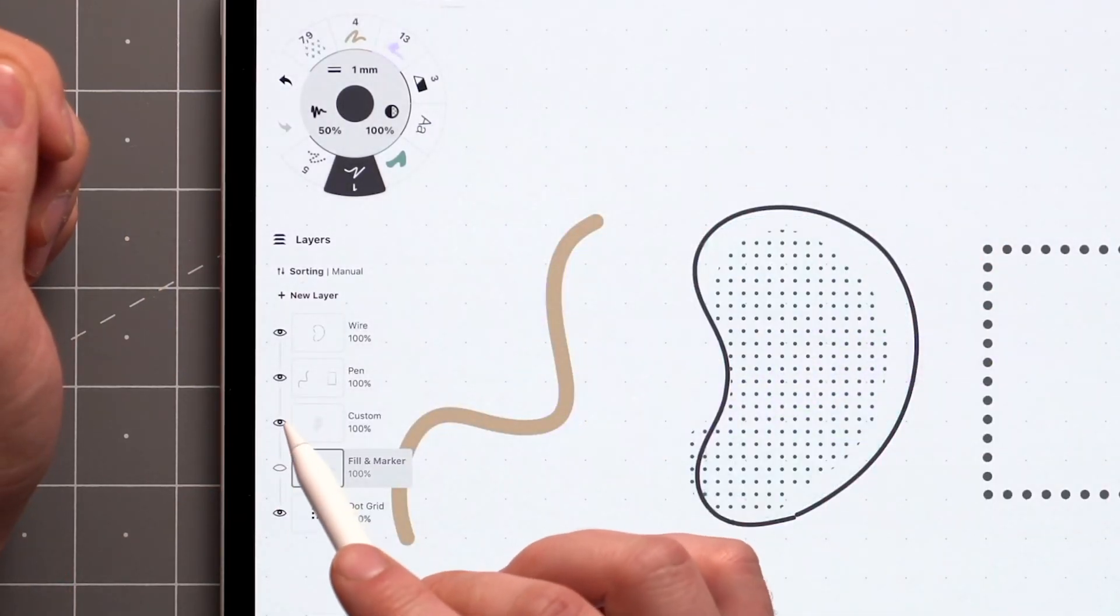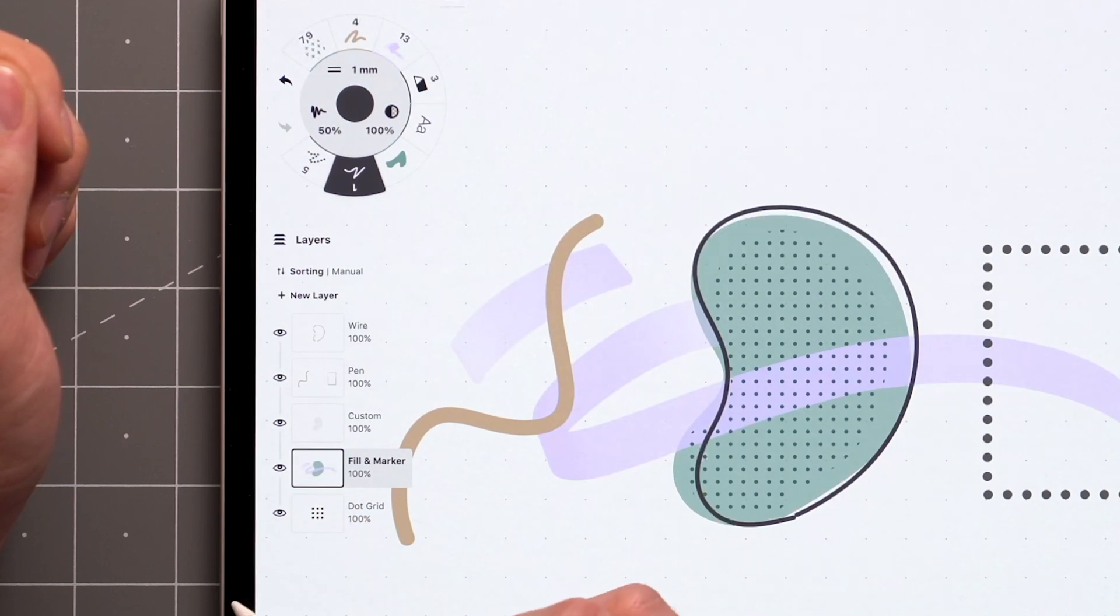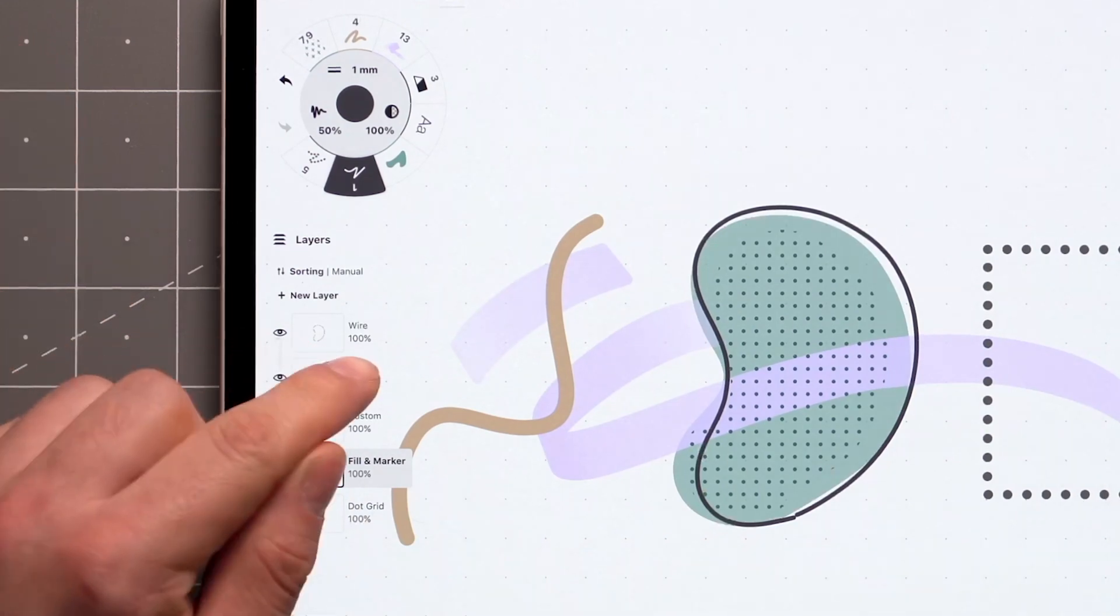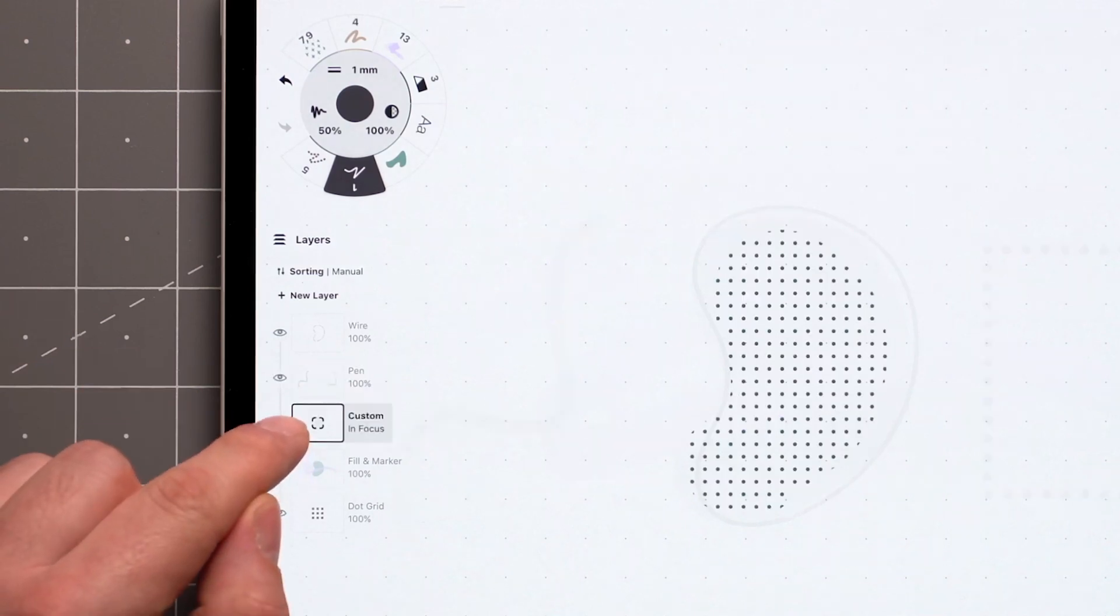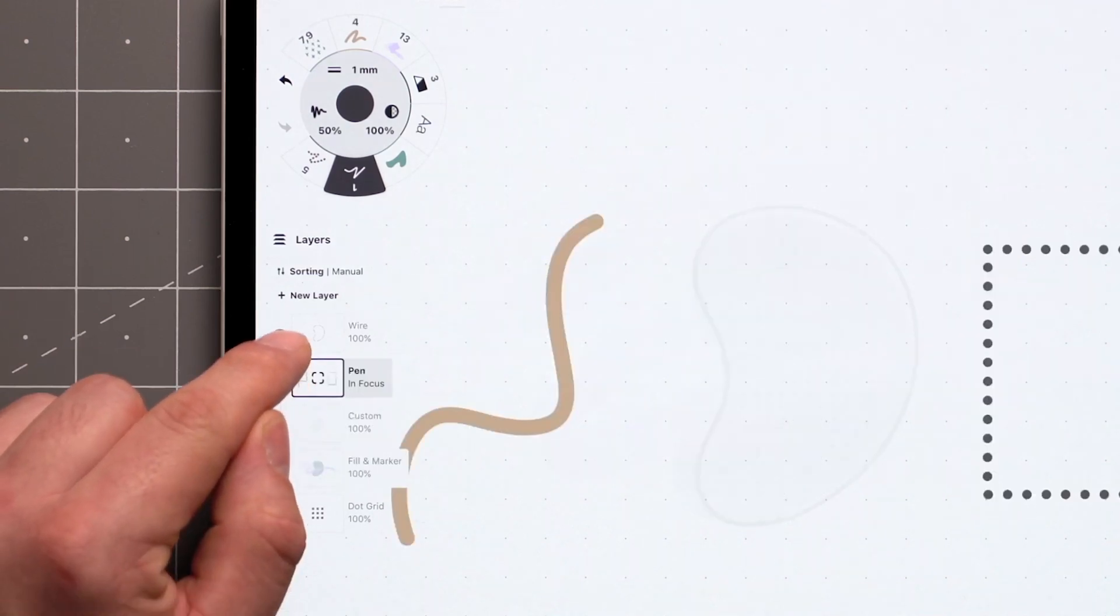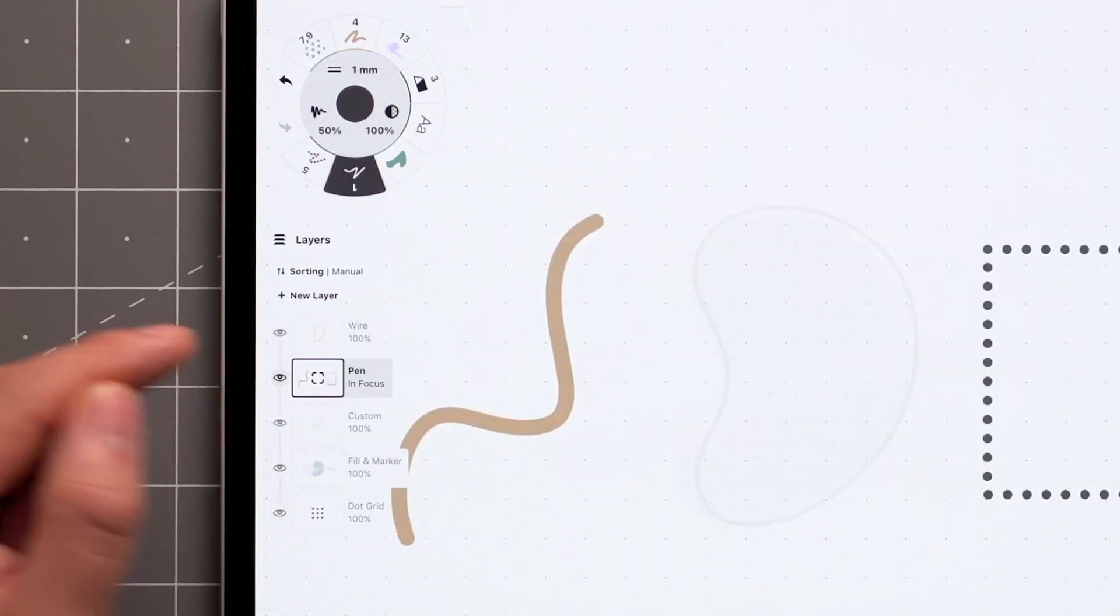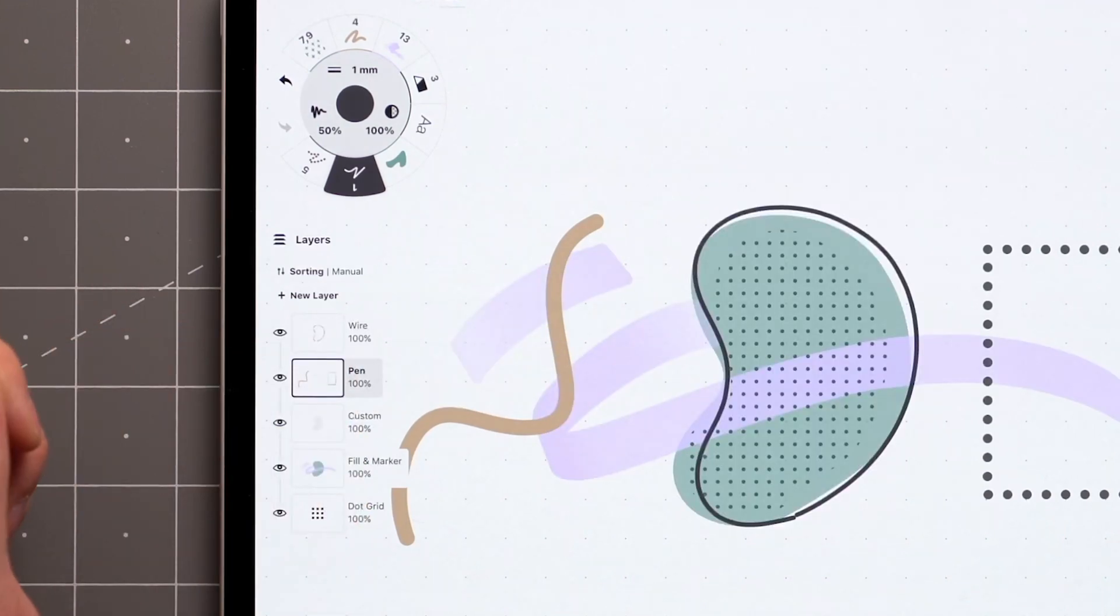The visibility of a layer can be toggled by tapping the eye icon next to it. You can also focus on a single layer at a time either by double tapping it or by scrubbing on the eye icons on the side. Double tapping on the layer in focus resets the view to normal.